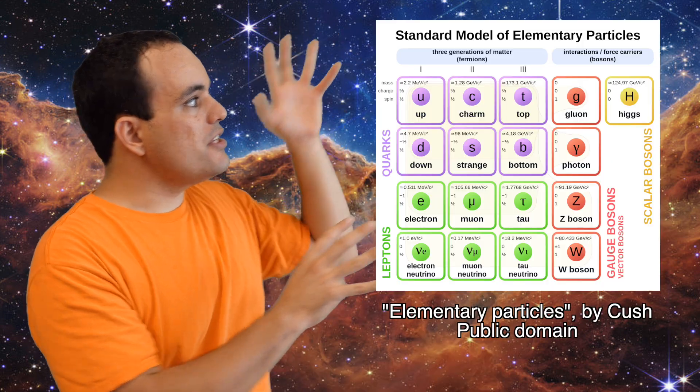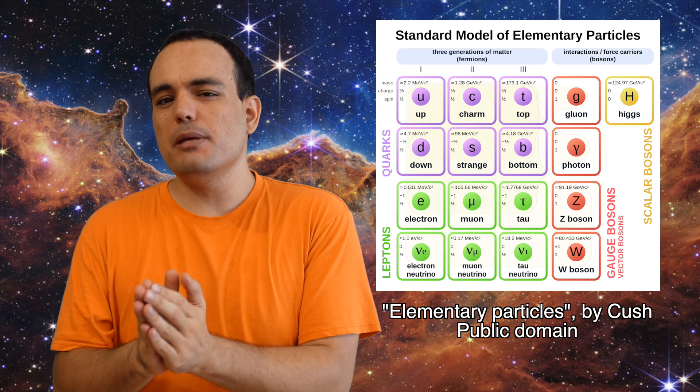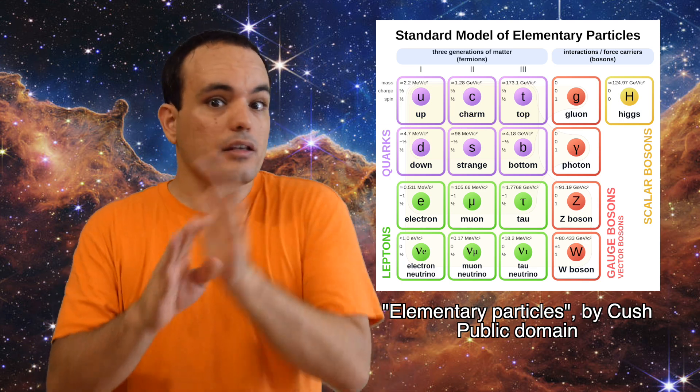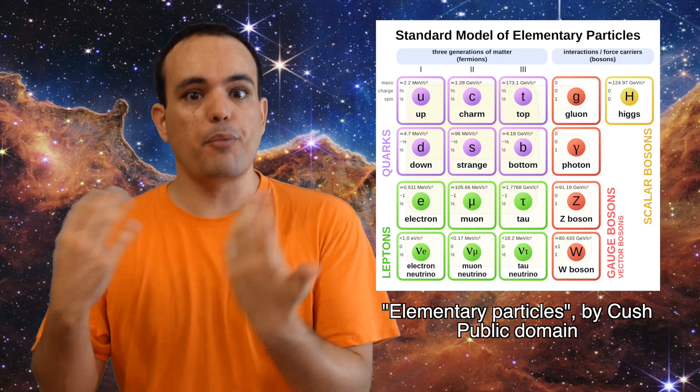Over the years, many scientists have tried to communicate the information in the standard model visually, and this has resulted in many standard model diagrams. This is probably the most famous one. It is the one used in Wikipedia, and it reminds people of the periodic table. And it is great if what you want to communicate are the different properties of the particles,